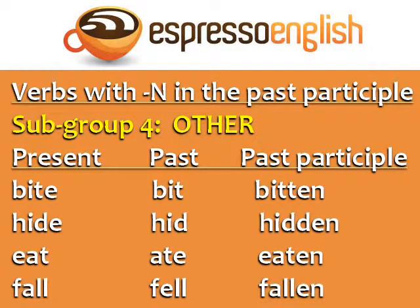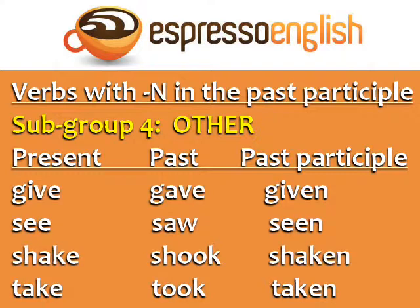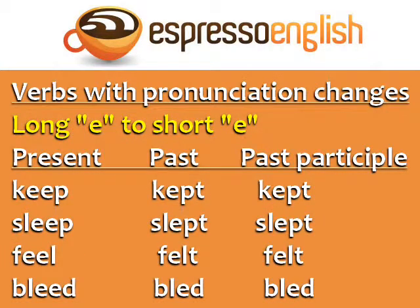Finally, we have subgroup four — other verbs that have N in the past participle but don't appear to follow any other pattern: Bite, bit, bitten. Hide, hid, hidden. Eat, ate, eaten. Fall, fell, fallen. Give, gave, given. See, saw, seen. Shake, shook, shaken. Take, took, taken.